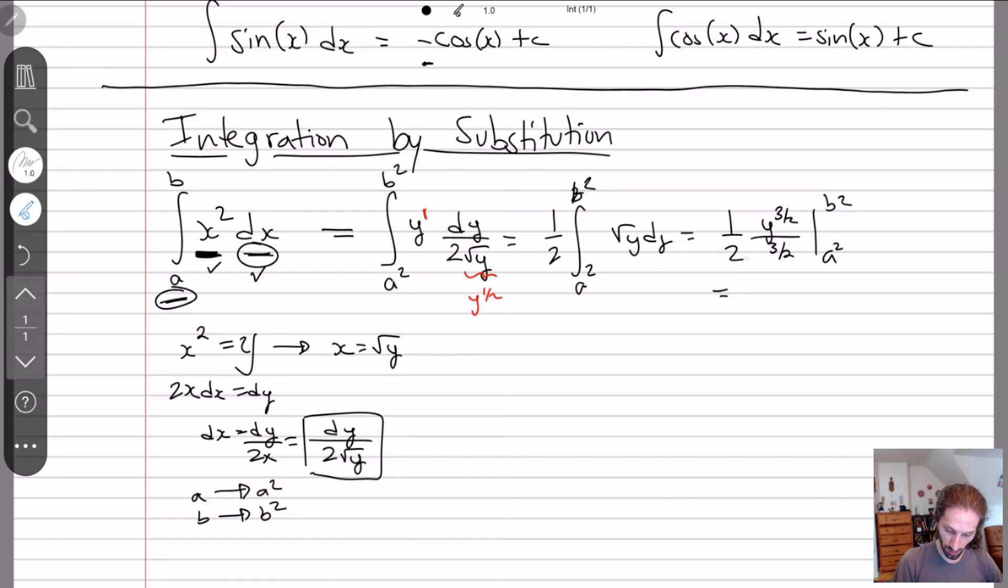And then so here, what we do is we add 1 to the exponent, 3 halves. And we divide by the new exponent. And we'll do this from a squared to b squared. So here, the twos kind of cancel, 3 over 2. So we get b squared to the 3 half over 3 minus a squared to the 3 half over 3. So this is just b cubed over 3 minus a cubed over 3. And notice how we get the same solution if we had just done it outright. So there's no difference.